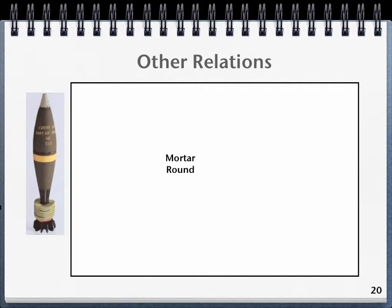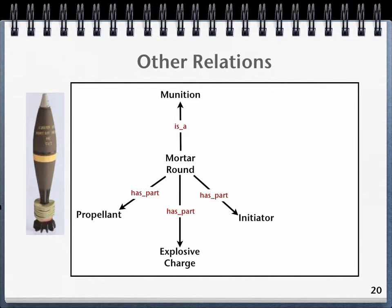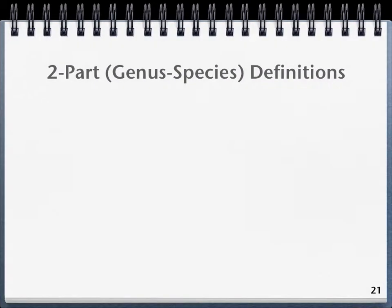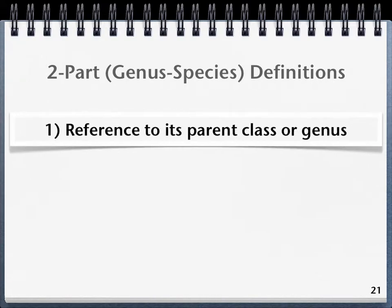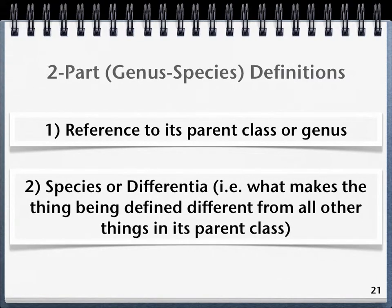Accurate taxonomies will promote the backbone which will allow us to make relations between entities explicit. For example, a mortar round is a type of munition which has parts and can be in an IED component role. When creating a definition, always start by referring to the genus or parent class of the thing being defined. Then add the species or differentia, which are those attributes that distinguish the thing being defined from all other things in the parent class.